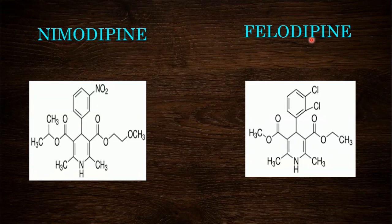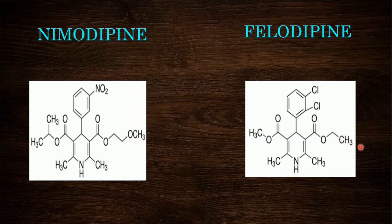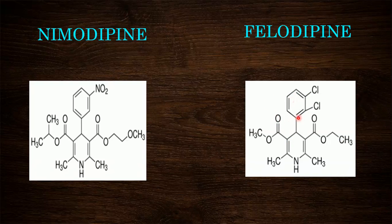Next structure is felodipine. Felodipine also contains the basic nucleus 1,4-dihydropyridine. Two methyl groups are present at the second and sixth positions, and ethyl ester and methyl ester are present on either side of the ring. Dichlorobenzene is attached at the fourth position.